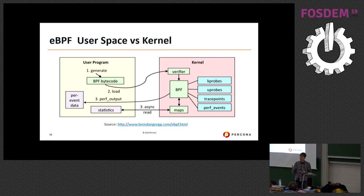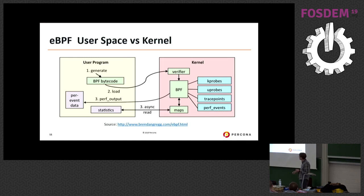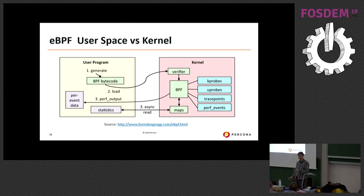eBPF has support both on the kernel side and the user side. A user program generates bytecode which is verified by the kernel through BPF. It can connect to different kernel interfaces — kprobes, uprobes, tracepoints, perf events. Maps are data structures used to accumulate performance statistics: a probe runs and accumulates data in a map, and then a user-space program reads that data from the map and displays it.